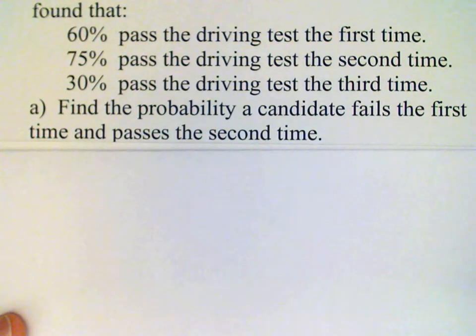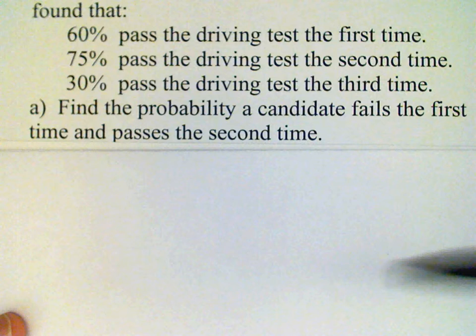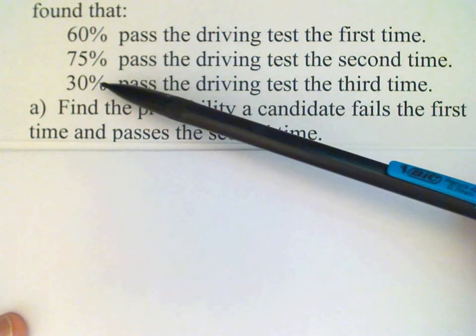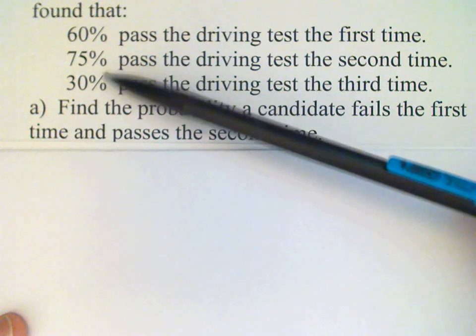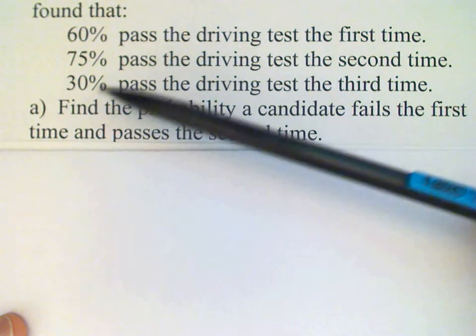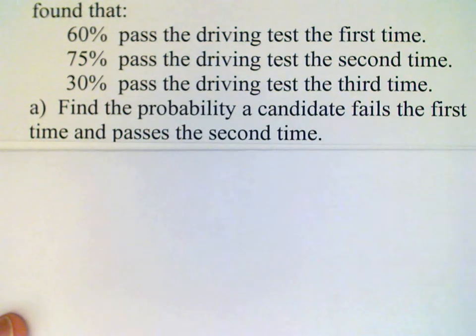And by the way, you should see that the second and third numbers given here are conditional probabilities, because this 75% is contingent on the candidate failing the first time.